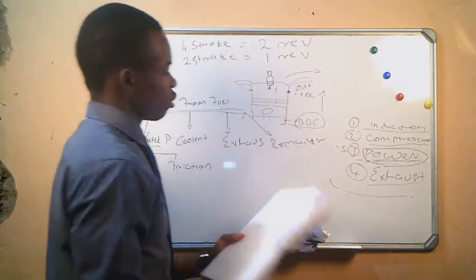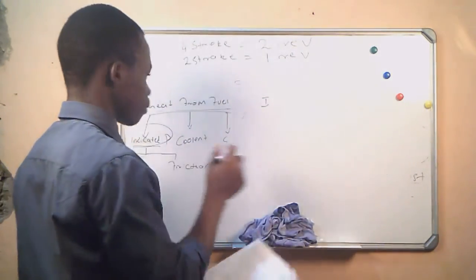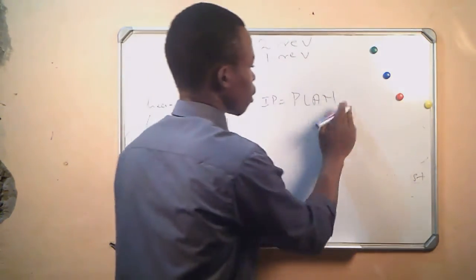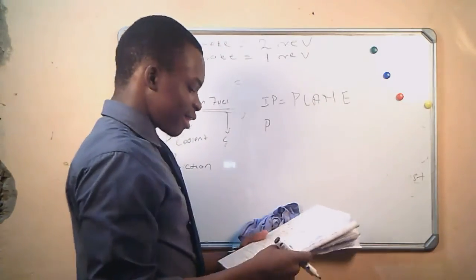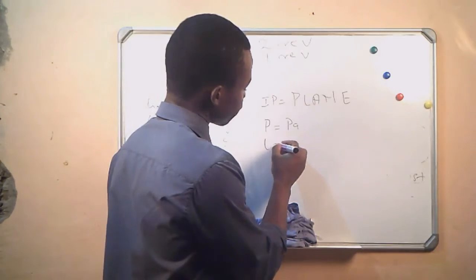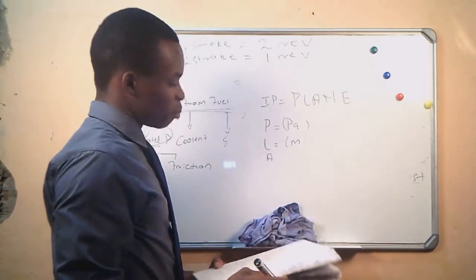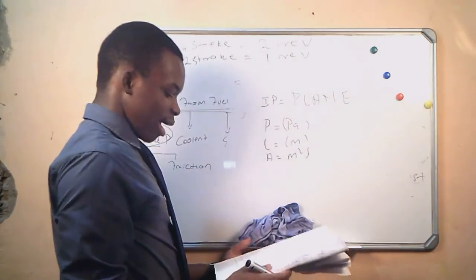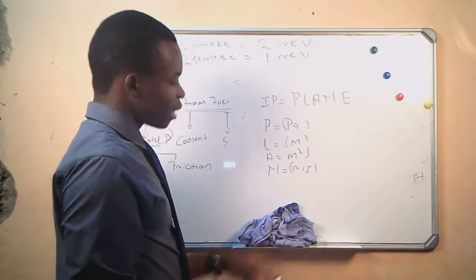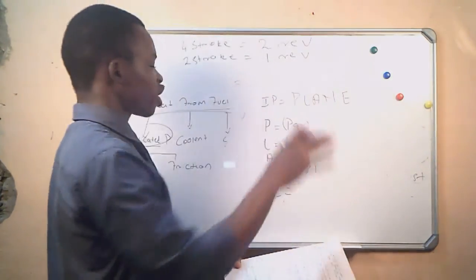We have these equations. The indicated power is calculated using the formula P × L × A × N × E, where P is the indicated mean pressure in Pascals, L is the stroke length in meters, A is the cross-sectional area of the piston in square meters, N is the rotational frequency in revolutions per second, and E is the number of cylinders in the engine.